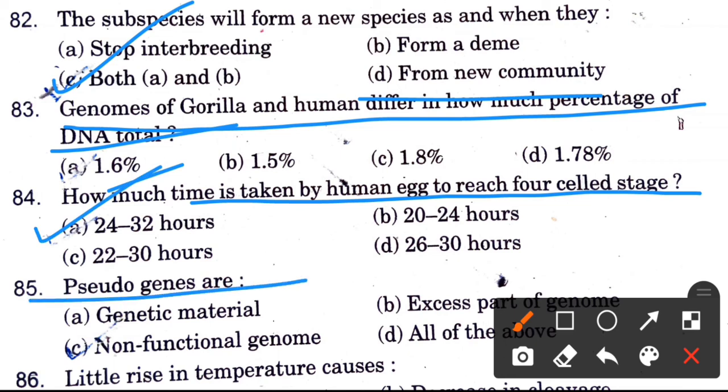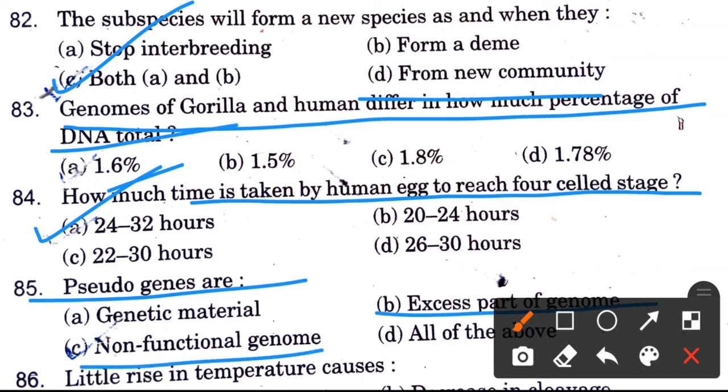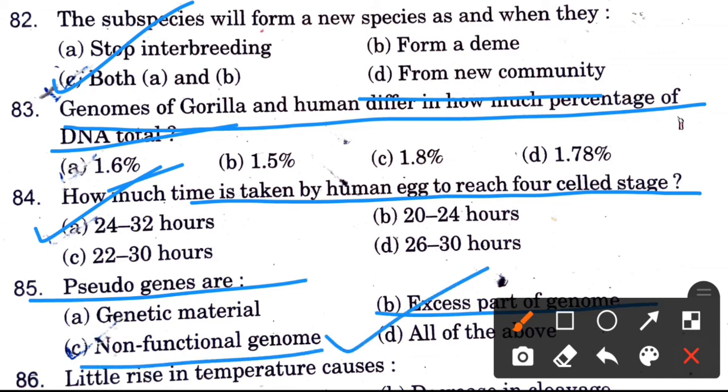Pseudogenes are — options are genetic material, excess part of genome, non-functional genome. The answer is all of the above.